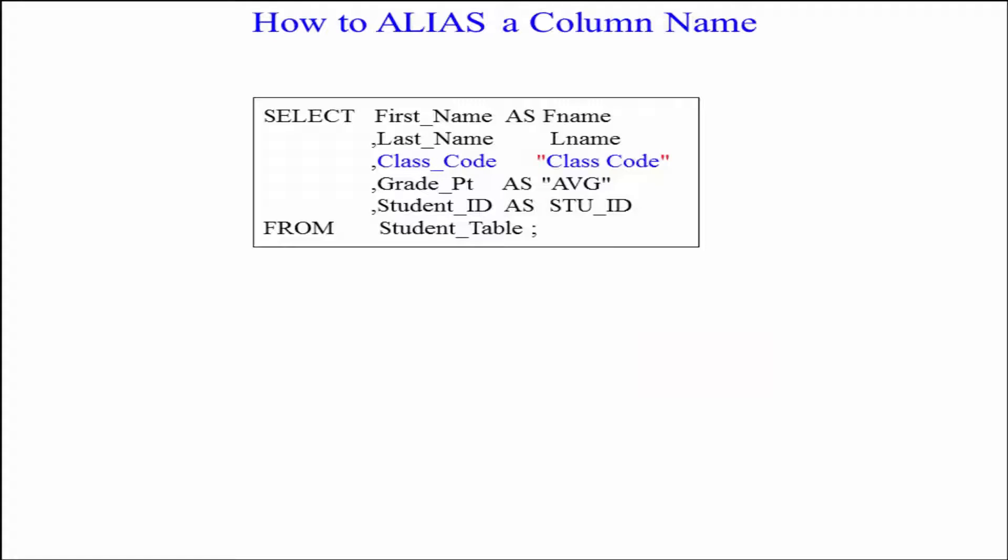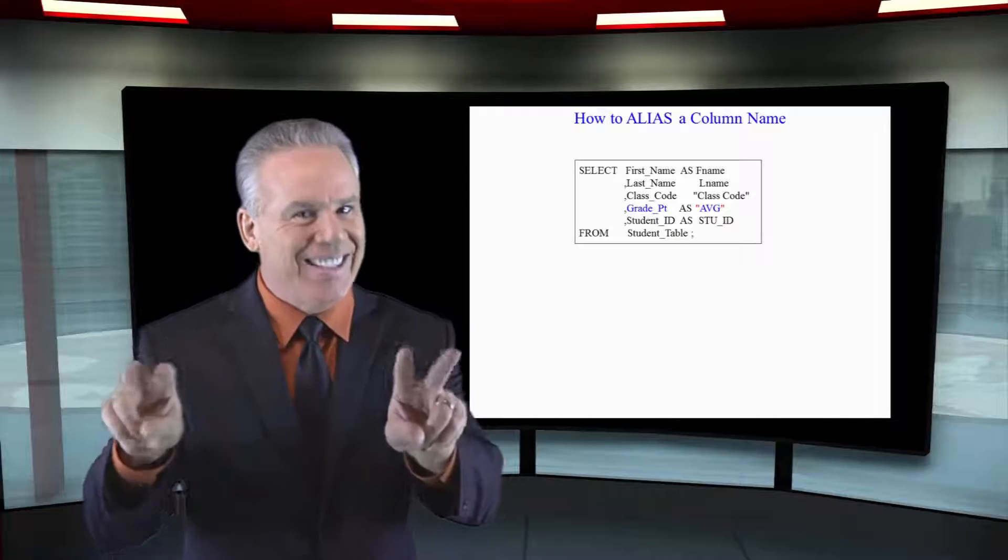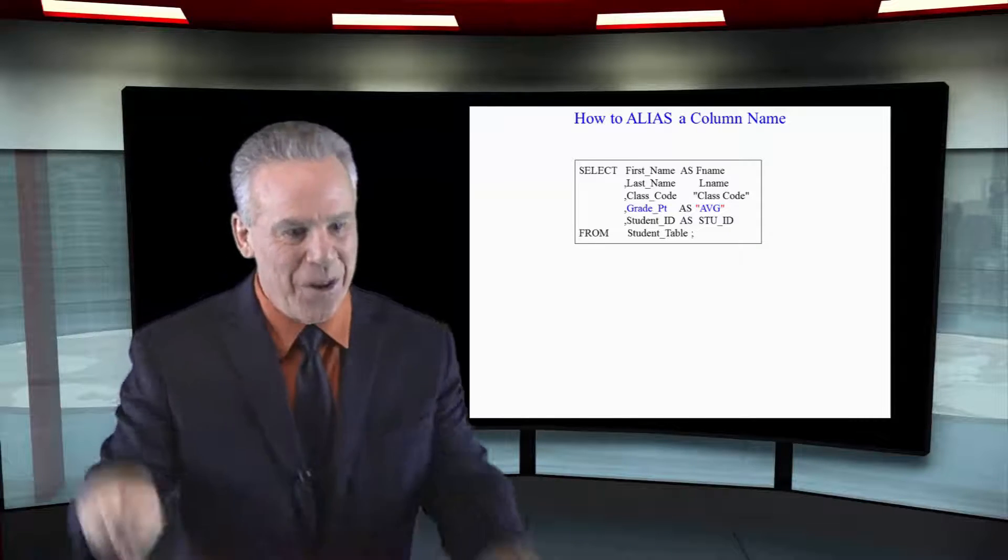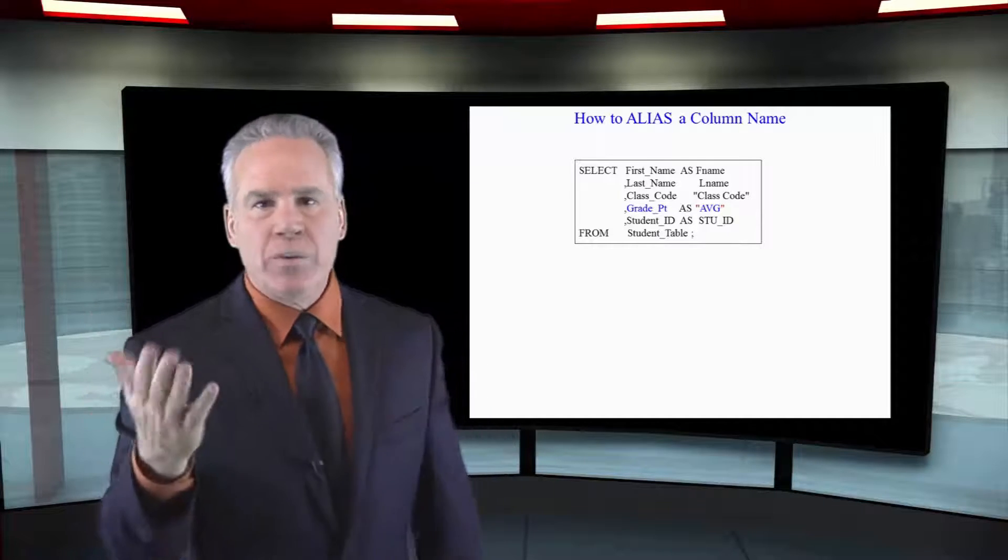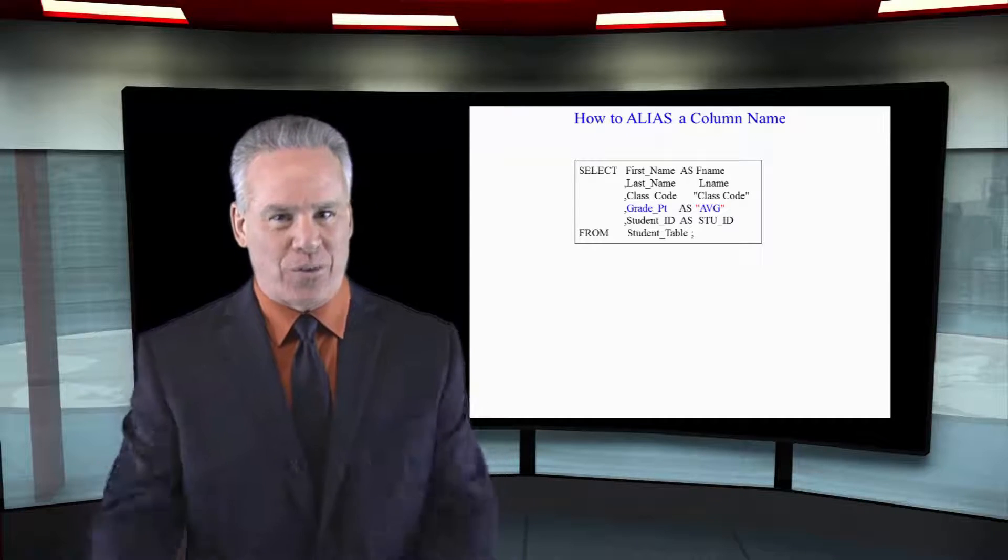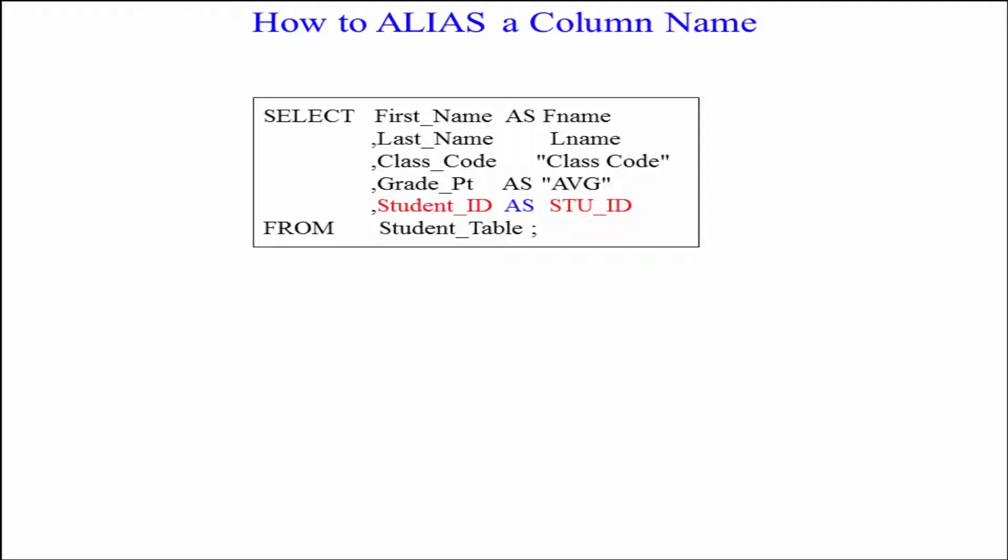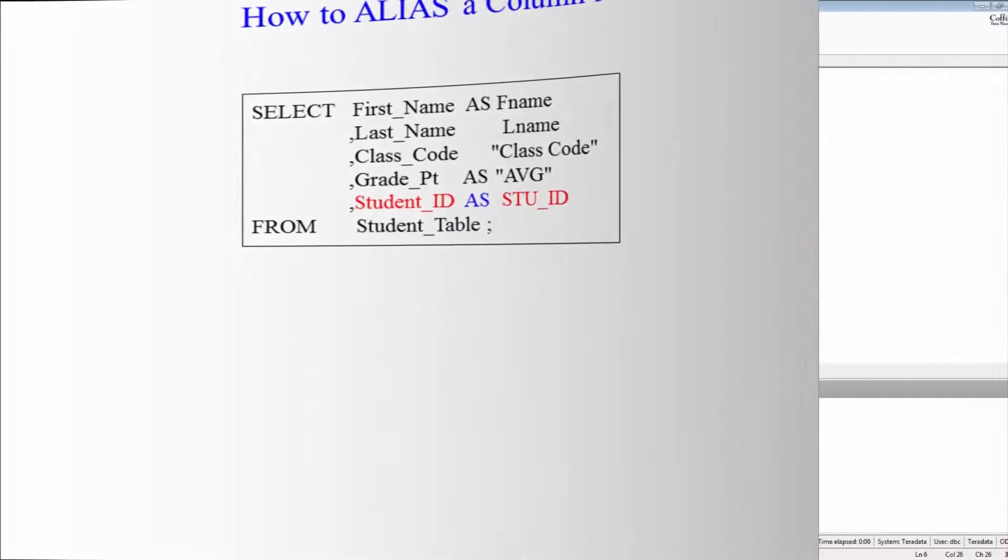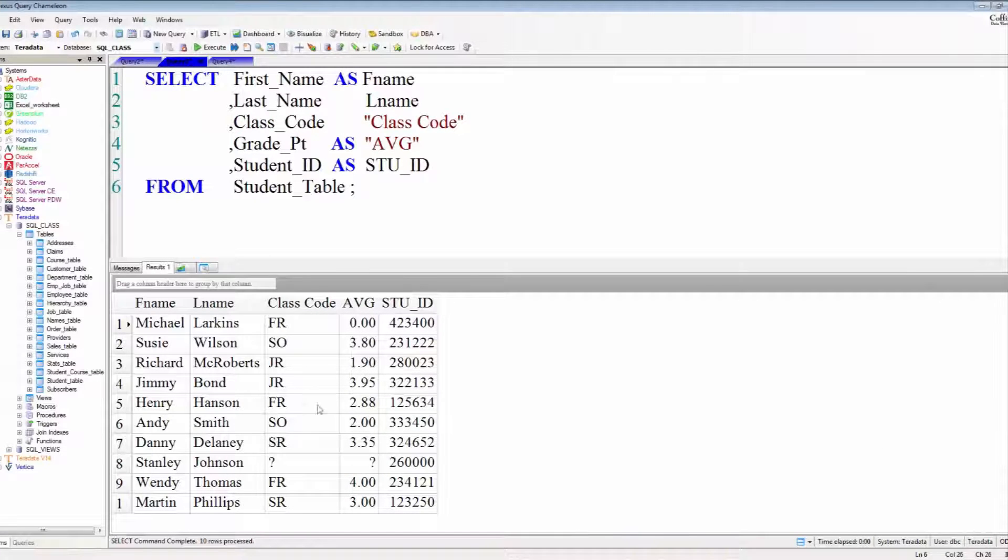Now look at the next example: double quotes AVG. There's no space in there, but it's a reserved word. So any reserved words like FROM or SELECT as an alias, those aren't the best aliases in the world, but if you did use those, they're reserved words, you've got to put double quotes around them. And then of course, lastly, AS STU_ID. They don't need double quotes because there's no space. Remember, anytime you're aliasing, it's the only time you'll see double quotes.